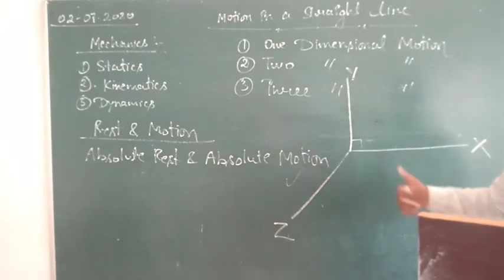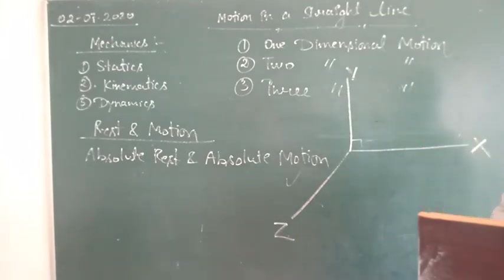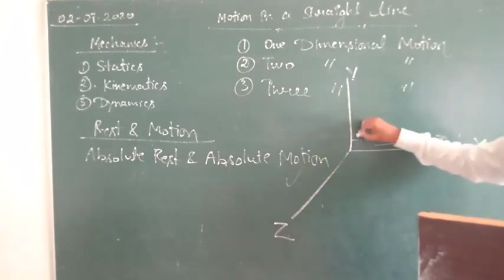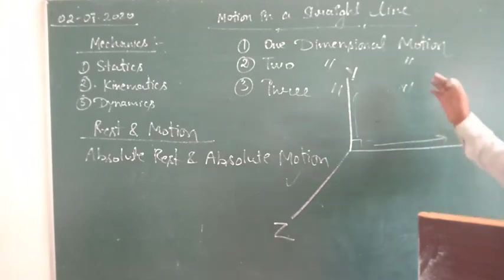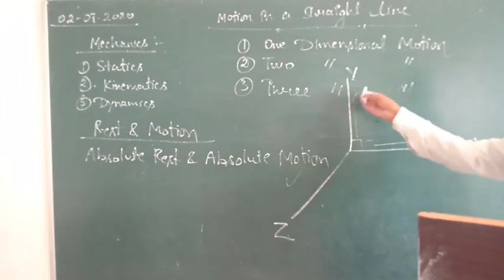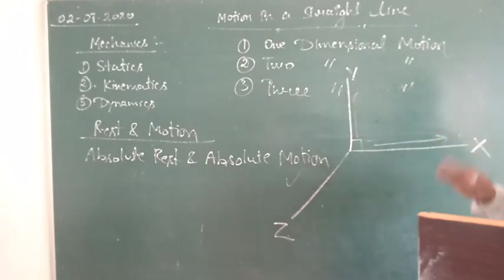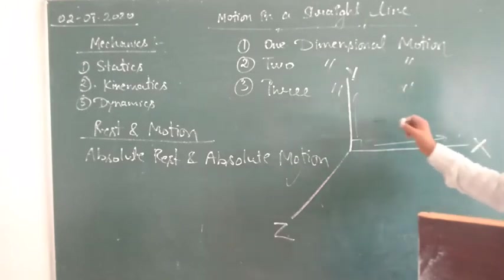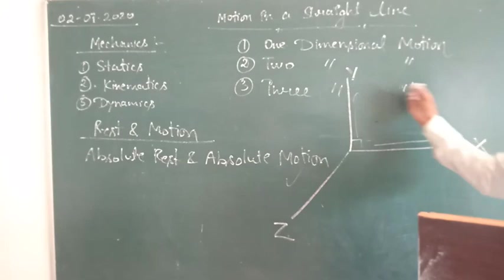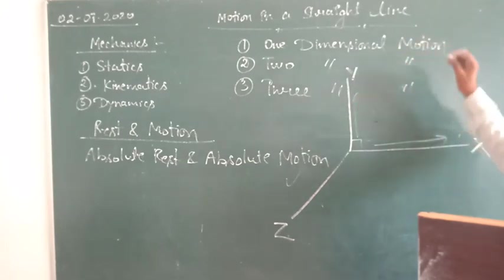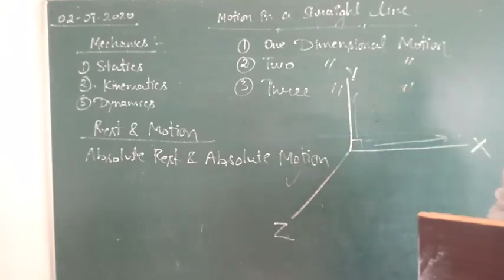To summarize: one-dimensional motion — if the object is moving in a straight line, only one axis is required. Two-dimensional motion — if the object is turning, at least two axes are needed. Three-dimensional motion — if the object is also flying, these two axes are not enough and we need at least the third coordinate system.